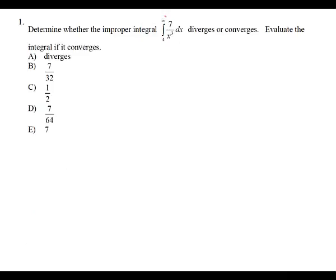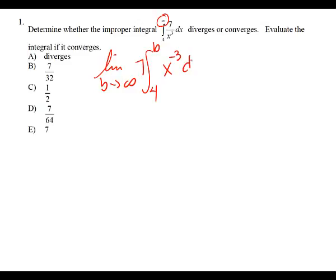We would write the limit as B approaches infinity. It doesn't matter what letter you use — probably not X. So to B, I'm going to pull the seven out front and make it X to the negative three, DX.